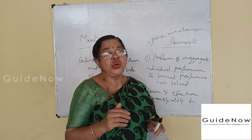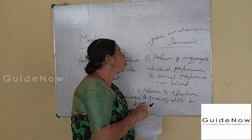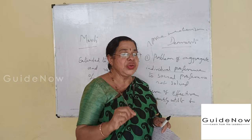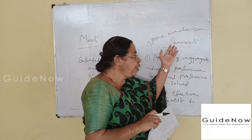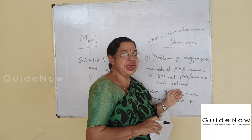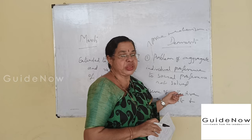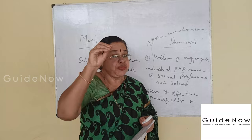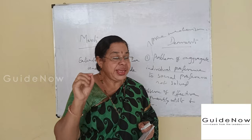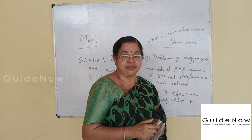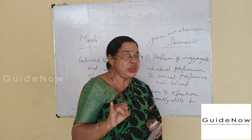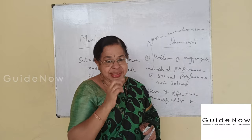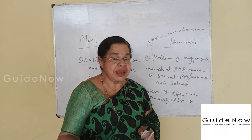These are the two important problems or difficulties faced in the case of the marginal utility approach. Because of these problems, we now suggest the second important approach to explain the theory of public expenditure. There are three important approaches: first, the marginal utility approach; second, the voluntary exchange approach; and third, the Samuelson approach.